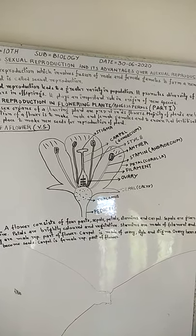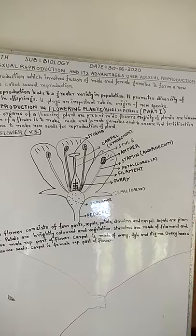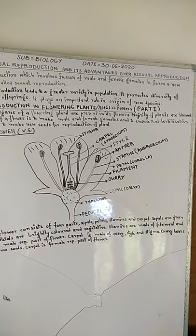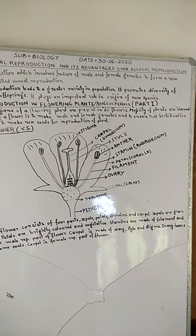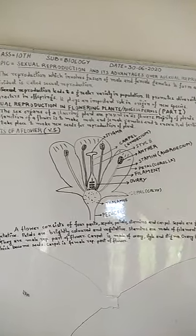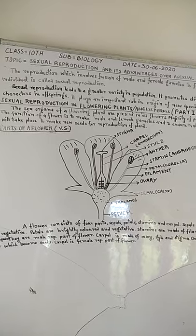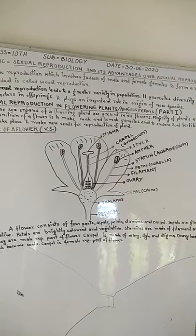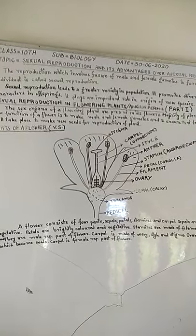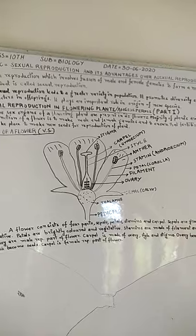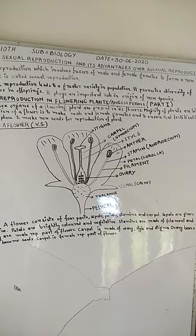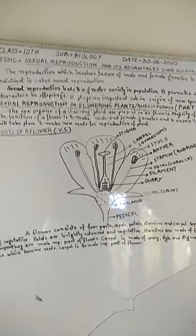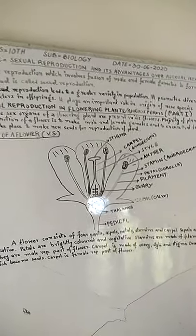The fourth part is carpel. Carpel is made of ovary, style, and stigma. Ovary bears ovules which become seeds later on. Carpel is the female reproductive part of a flower.